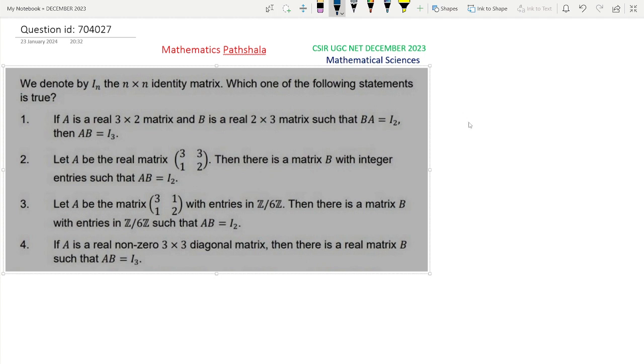So see here, since BA equals I2, if possible suppose that AB equals I3, then just calculate the rank of these two matrices. Rank of I3 equals 3, and this equals rank of AB. We denote rank of A by ρ(A). Now this rank of AB is actually less than or equal to minimum of rank A, rank B. This is a well-known result in linear algebra.